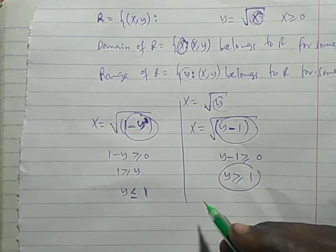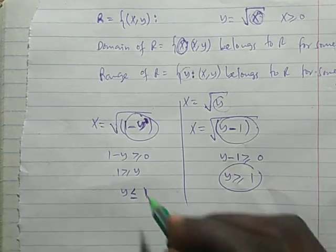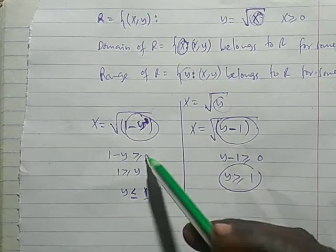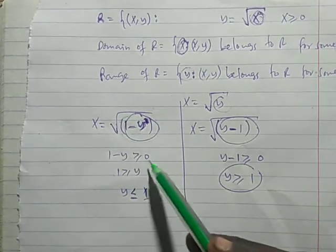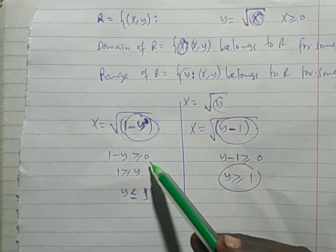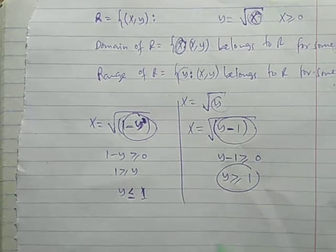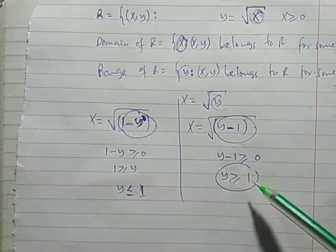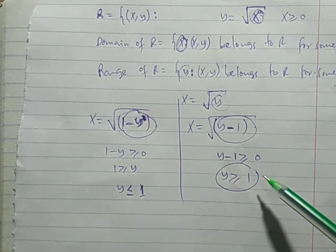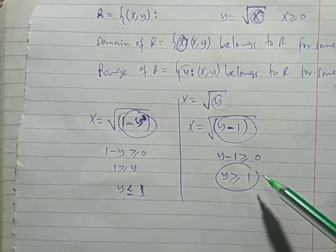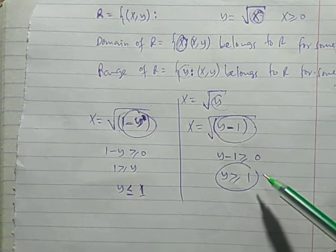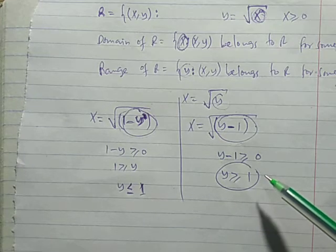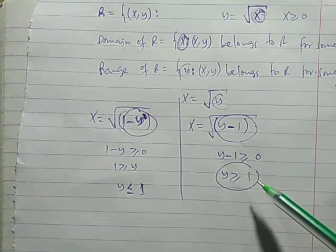Iri kwamba, for X yiwezekane kutokea, hichikitu chandani chote kiwe greater than or equal to 0. Kwa hiyo, we use these concepts to solve domain and the range of a relation — domain and range of a relation.